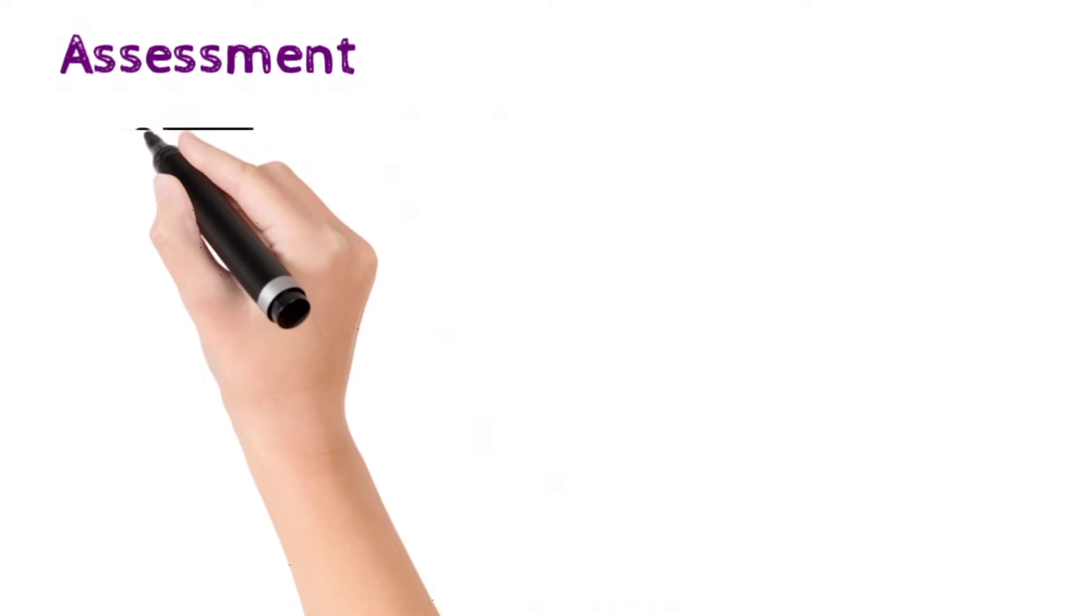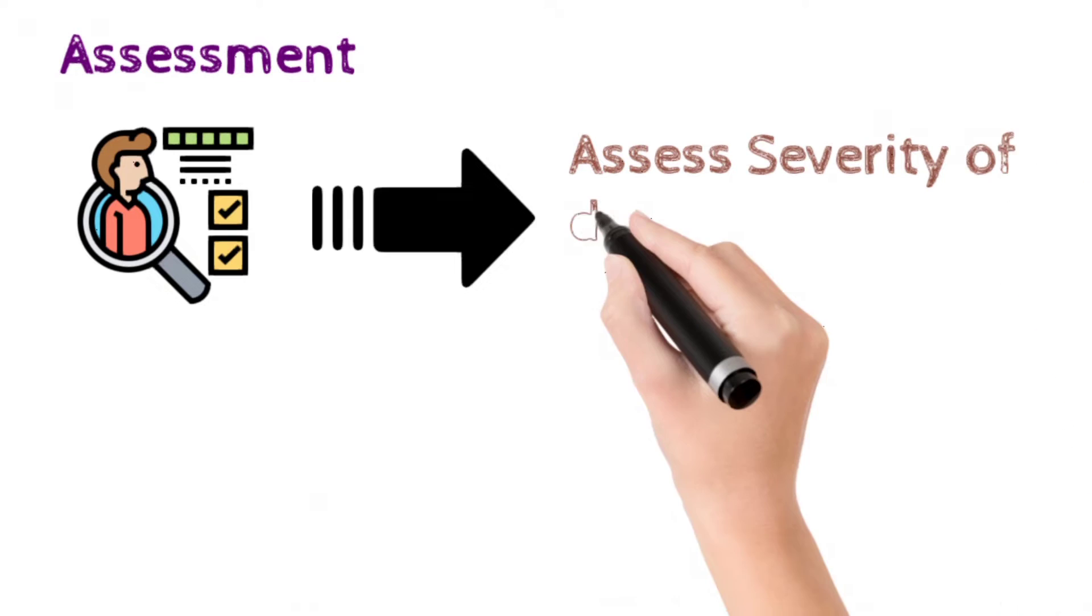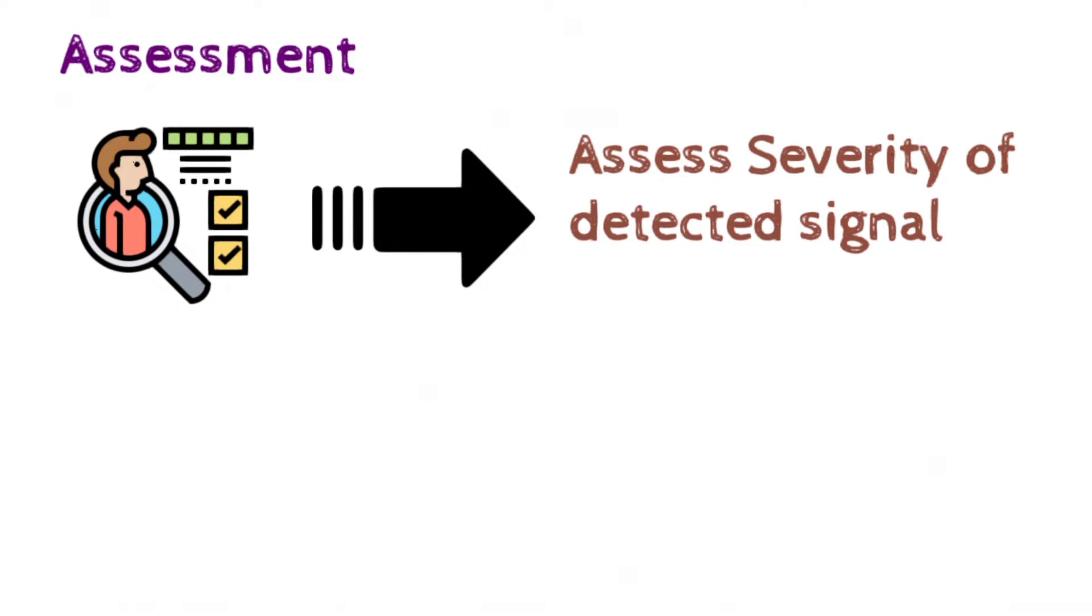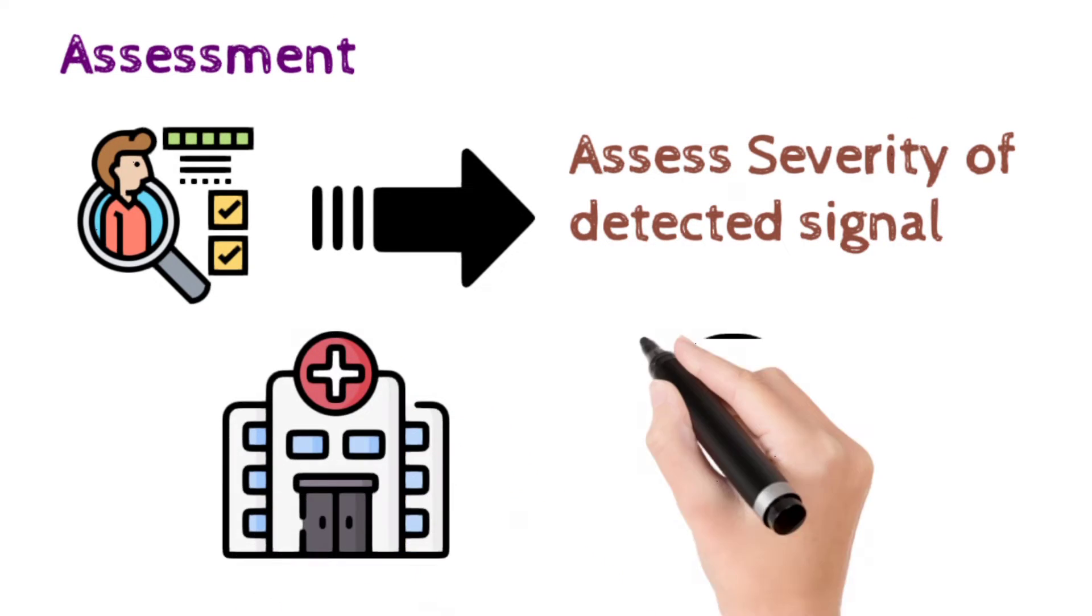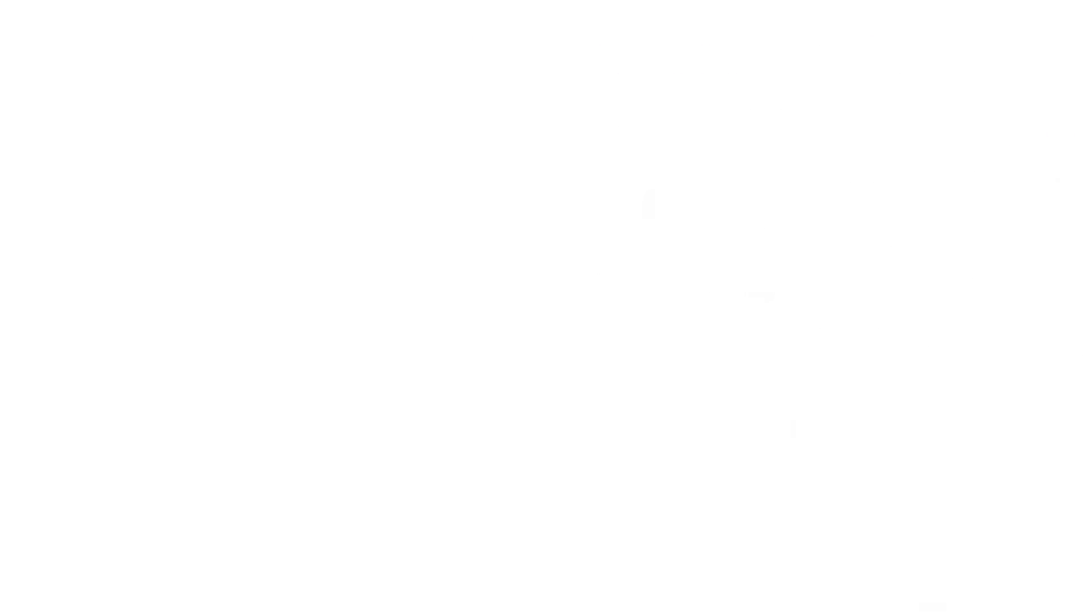Now the next step is assessment. In this step we assess the severity of the detected signal. For example, in our previous example of Nemesulide causing liver damage, we need to assess whether liver damage is a serious issue arising due to use of Nemesulide. For better assessment of the signal, we need to collect sufficient data on the signal.